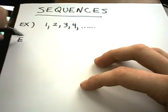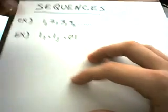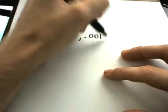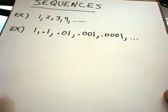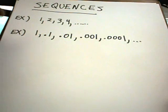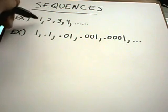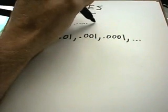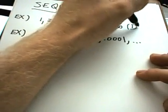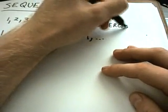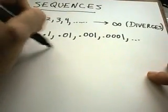Another example of a sequence would be one, point one, point zero one, point zero zero one, point zero zero zero one — and assume this pattern continues. The key question for sequences is: does the sequence converge? In the first case, one, two, three, four, the numbers keep getting bigger and bigger, so the sequence goes off to infinity — we say it diverges.